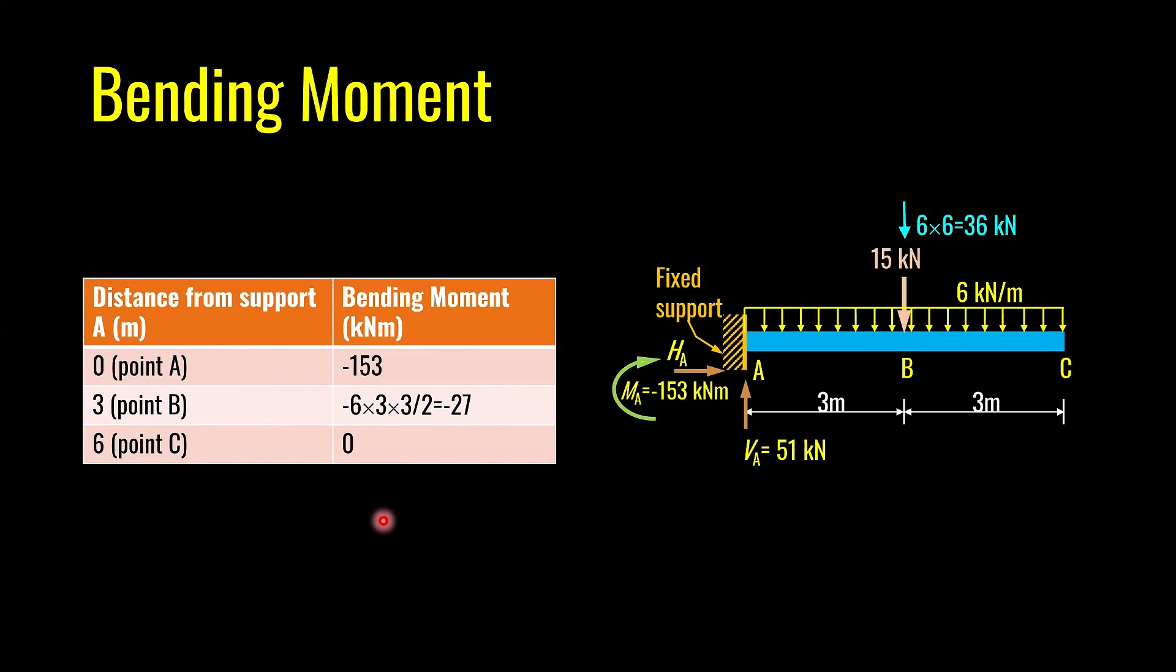Let's now move to bending moment diagram. For bending moment diagram, the first thing I want to do is work out moment at different points. First point is point A. Point A has a reaction moment, which is minus 153. Point B will have a moment generated due to this UDL, 6 kN per meter, if you are working out from the right side. I think in our case, it's easier to work from the right side. If you want, you can work out moment from the left side as well. Ultimately, you are going to get the same answer.